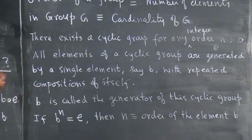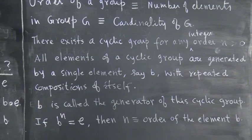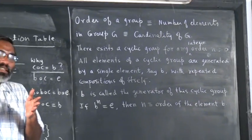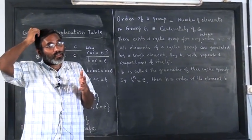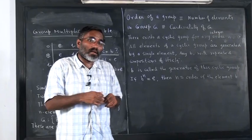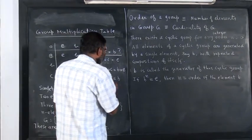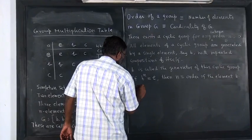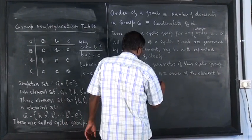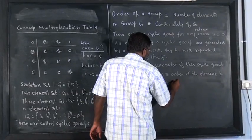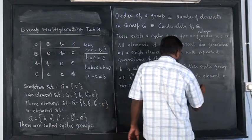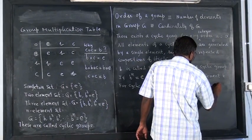There are other conditions. So if there are other conditions, that means you will have more than one generator. That means B, B square itself may be identity, B cube itself may be identity. You may have different generators with different orders. But for cyclic group, order of the generator is same as order of group.